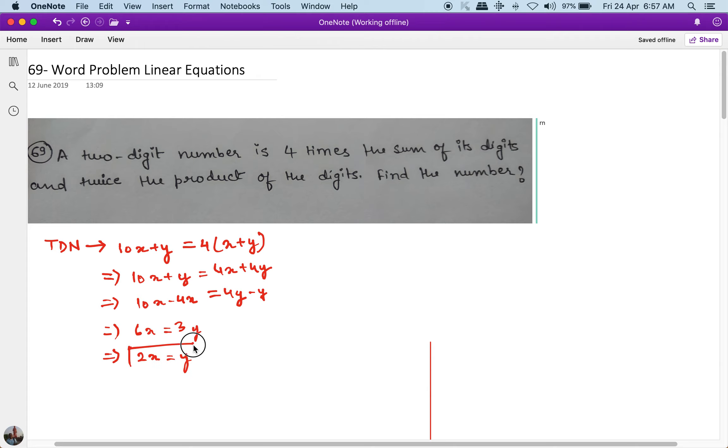So we know that y is equal to 2x. This is the first condition. The second condition is that the two-digit number is four times the sum of the digits. So this was this whole thing that we solved here, was condition 1 given to us.